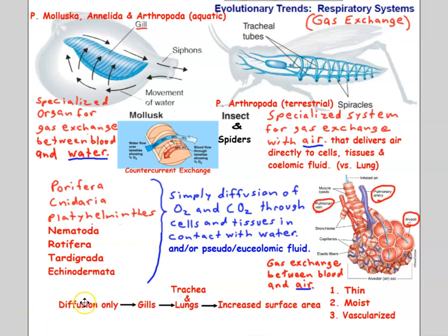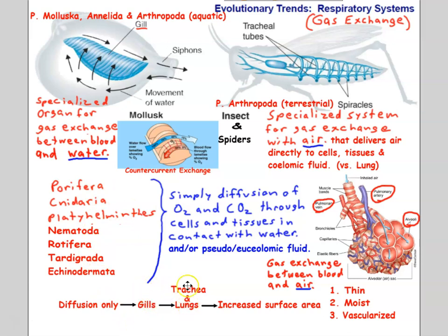To summarize: the trend in respiratory systems is from simple diffusion used by most small aquatic invertebrates, to gills for exchange with water, to trachea and lungs for exchange with air, and then increased surface area to increase the efficiency of gas exchange.